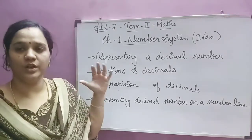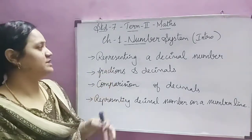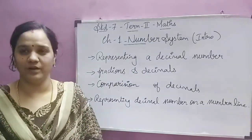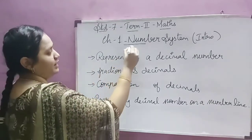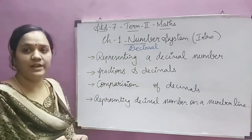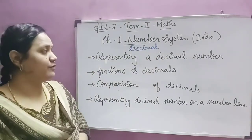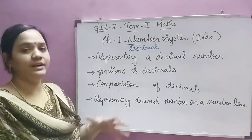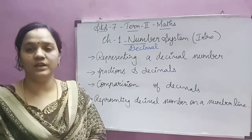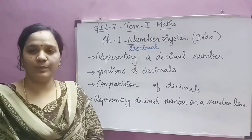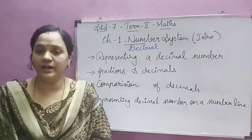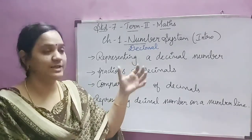First you should know what are the concepts we are going to learn in this chapter: number system. The first thing is you should know what is a decimal number. In last term we learned integers, but for second term we are going to learn decimal numbers in number system. We are going to learn the place value for decimal numbers.